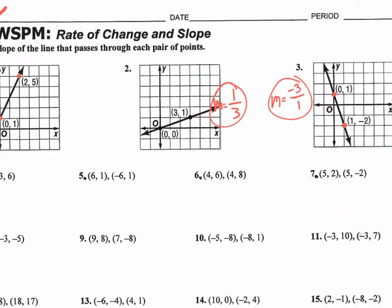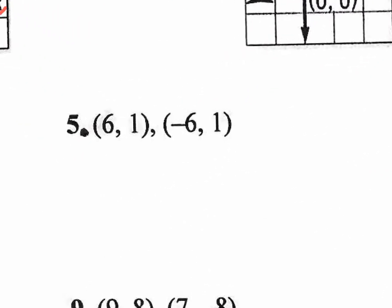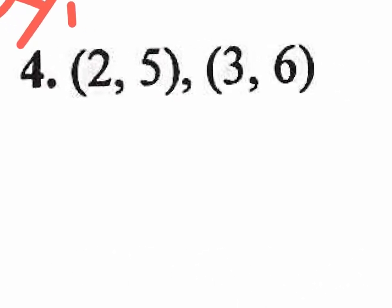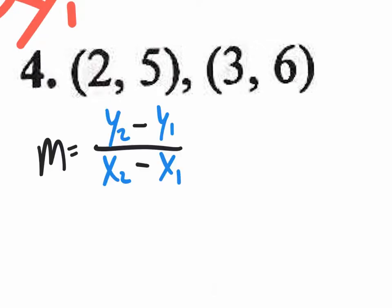Let's move on to the next part of the homework — number four. In order to find the slope, you need the slope formula. You have to have this formula memorized. You also need to recognize that the coordinates are x and y values, so please label them as x and y. This first one — (2, 5) — is the first coordinate; (3, 6) is the second. That's why we label them x1, y1 and x2, y2.